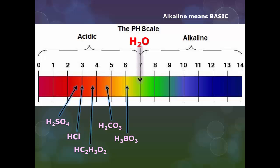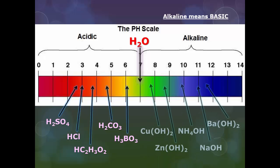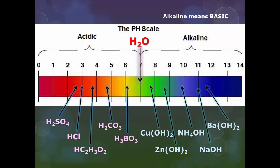We know that 7, which is right in the middle of this number scale, represents neutral, and that's what pure water is. Pure water is classified as a 7 or a neutral solution. And everything to the far right, going from 7 and above, that's where we're going to have our bases. So we have, for example, copper hydroxide, zinc hydroxide, ammonium hydroxide, sodium hydroxide, and barium hydroxide. They all sound very similar.